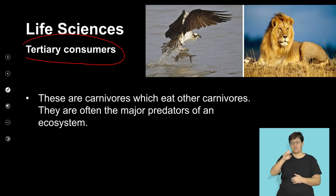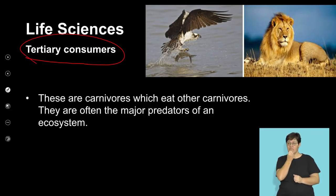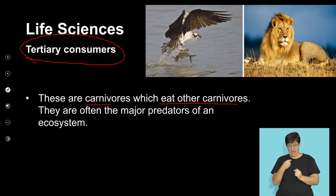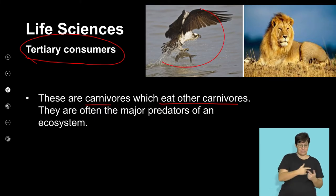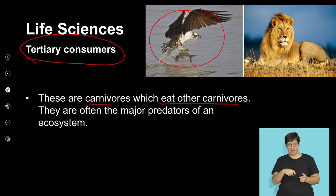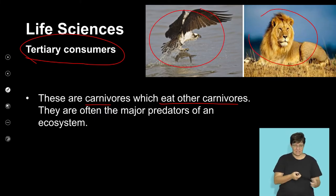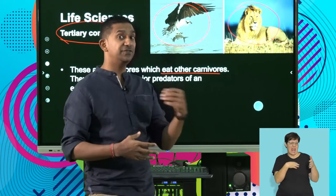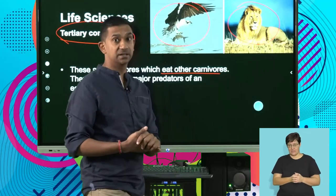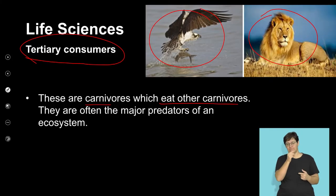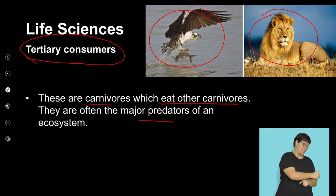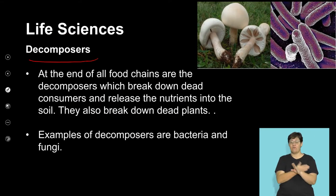Tertiary consumers are right at the top — individuals that feed off other carnivores. These are carnivores that can eat other carnivores. Examples include an eagle feeding off fish and a lion, which is an apex predator seen as a tertiary consumer. These feed off other predators and herbivores, and the amount of energy they get is passed on from the previous trophic level.